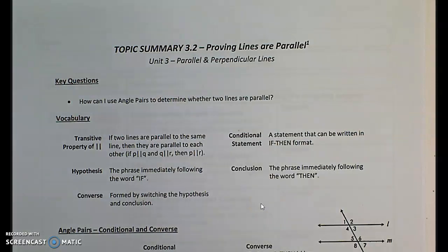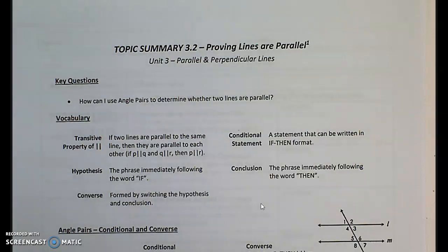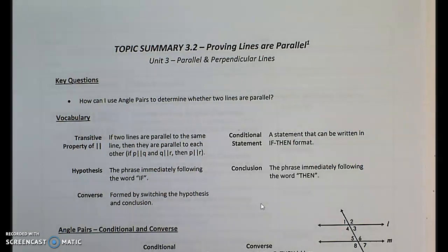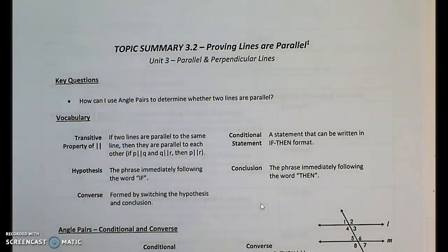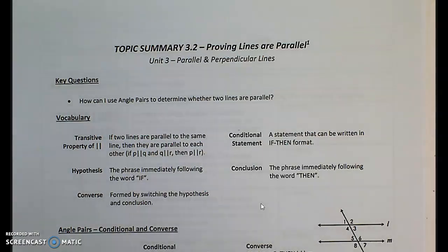We're in WorkPacket 3.2, covering pages 1, 2, and 3. Topic 3.2 is about proving lines to be parallel. In the previous section, we knew that lines were parallel and figured out properties relating to angle pairs. Now we're going to work the other way around and say: I don't know that the lines are parallel — how can I prove it? We're going to use angle pairs to determine whether two lines are parallel.